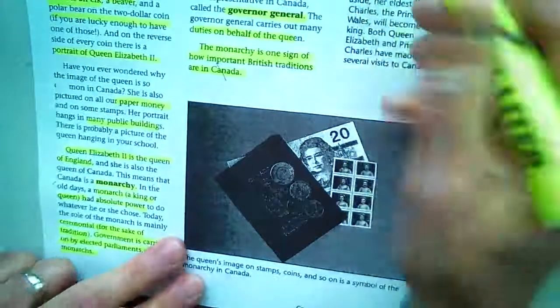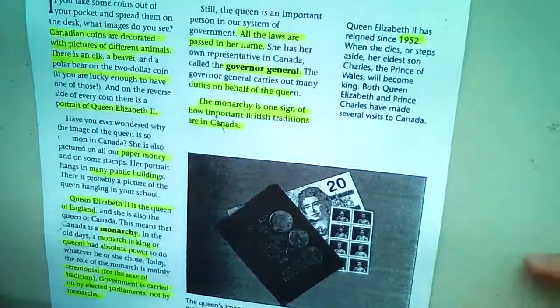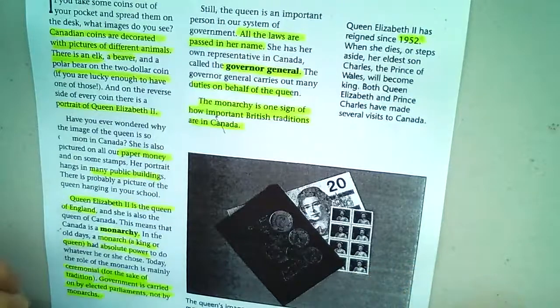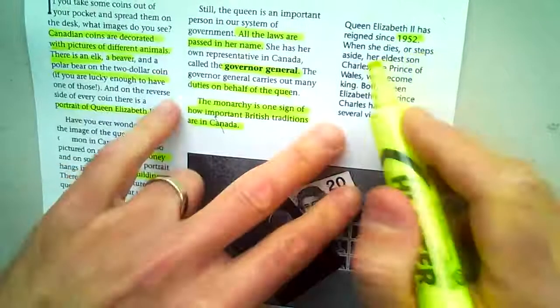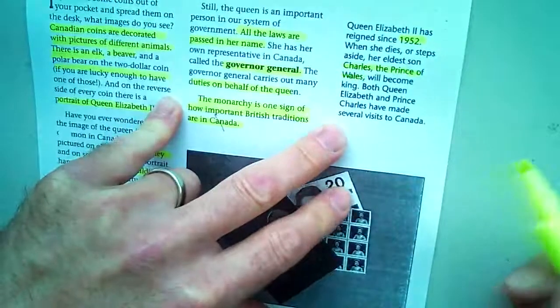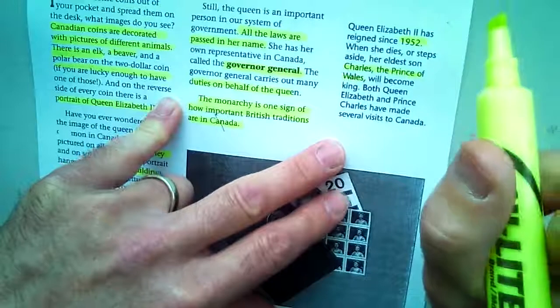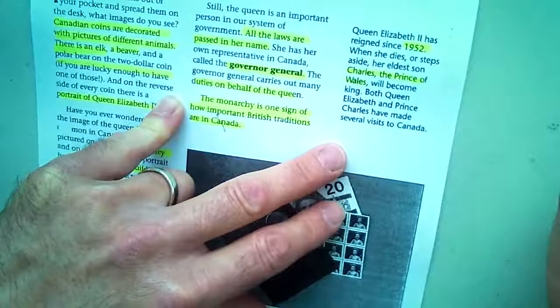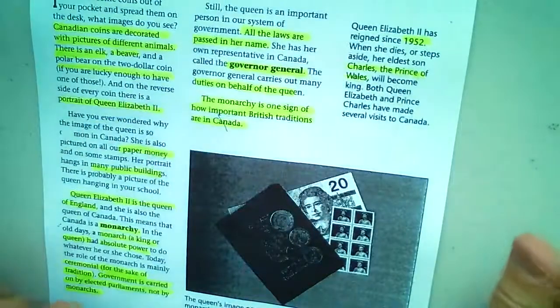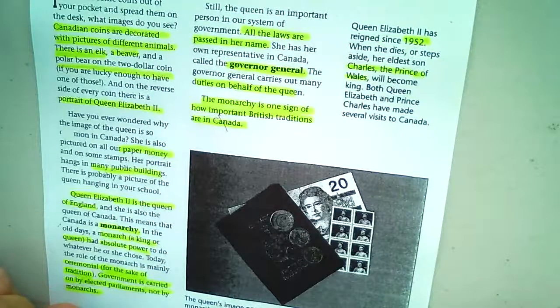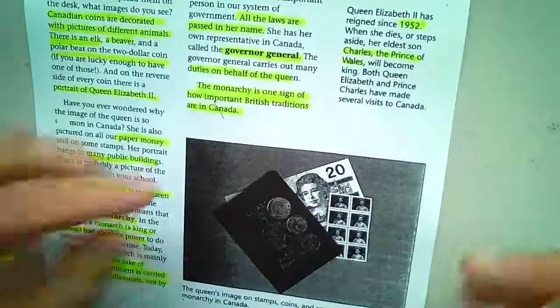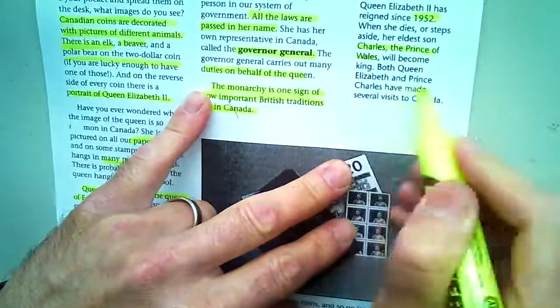Queen Elizabeth II has reigned since 1952 — that's close to 70 years. When she dies or steps aside, her eldest son Prince Charles takes over. He was married to Princess Diana, who was sadly killed in a car crash. His two sons are always in the news — one married Kate, and the other married Meghan Markle. That one made more news because they stepped away from the royal family. Both Queen Elizabeth and Prince Charles have made several visits to Canada.